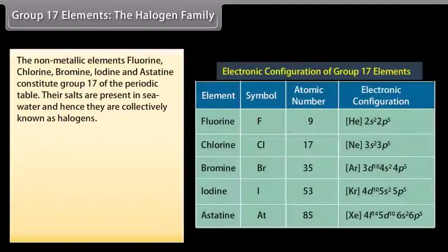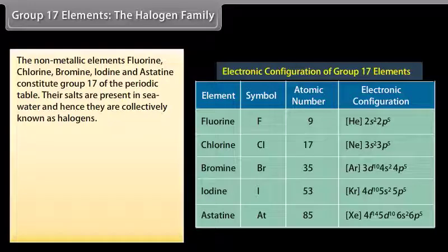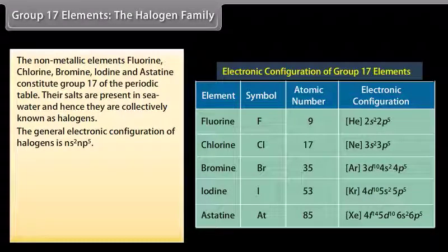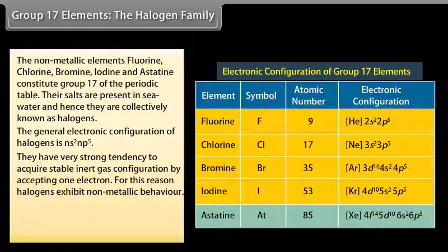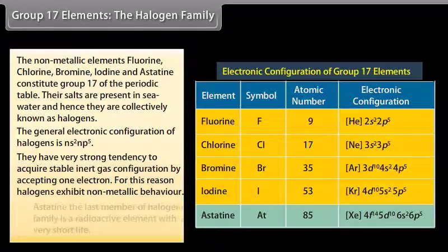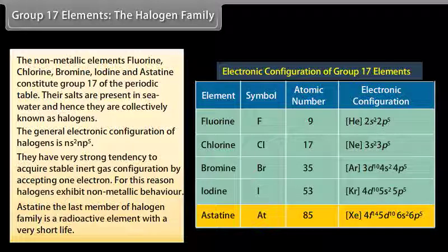Group 17 elements — the halogen family. The non-metallic elements fluorine, chlorine, bromine, iodine and astatine constitute Group 17 of the periodic table. Their salts are present in seawater, and hence they are collectively known as halogens. The general electronic configuration of halogens is NS²NP⁵. They have a very strong tendency to acquire stable inert gas configuration by accepting one electron, and therefore exhibit non-metallic behavior. Astatine, the last member, is a radioactive element with a very short life.